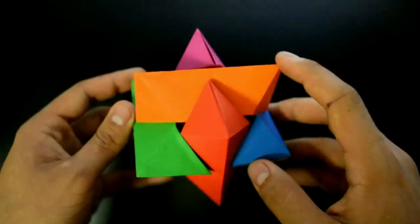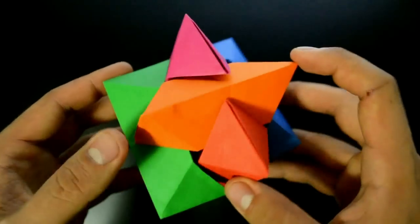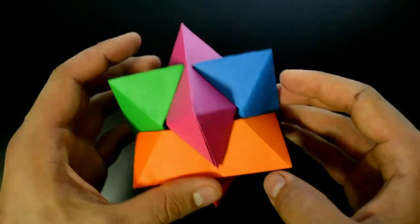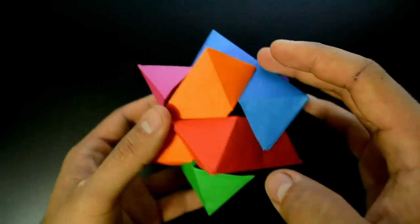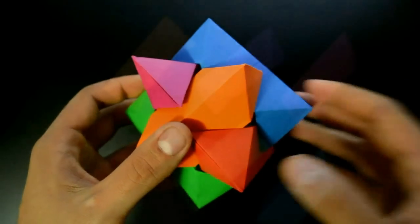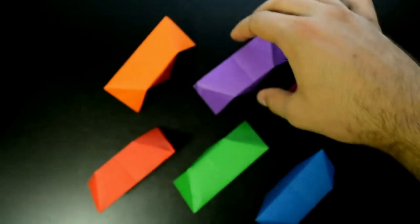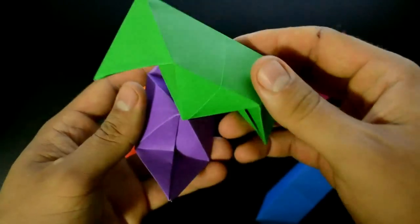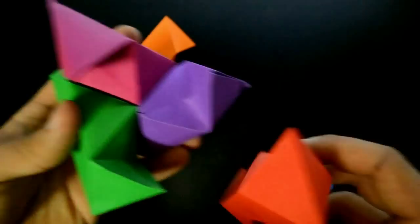Hi everyone! Welcome to a new video! Today we'll make a burr puzzle. This model consists of six parts. Each one is made with a square of paper. I found this origami on the internet. This is my version.